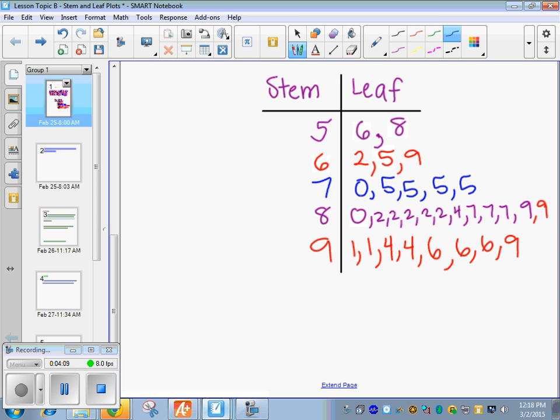So, let's find a couple things on them. How about the range? Can we find the range? So, Dustin, what's the largest number? 99. Aaron, what's the smallest number? 56. When you do the range, you need to show me the largest minus the smallest. So, be sure you show 99 minus 56. So, what is the range? 43.